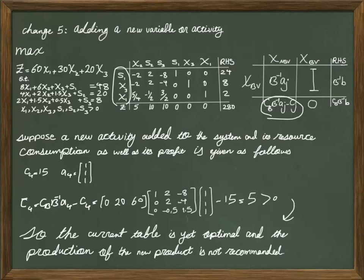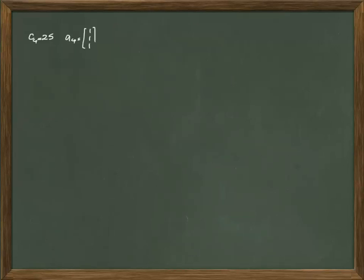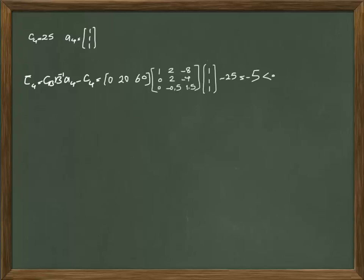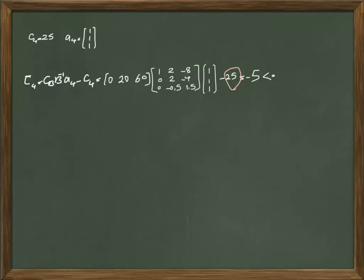However, there are scenarios where you get a negative value for the row of Z coefficient for X4, and then you might end up having to produce X4 by continuing your table. Let's look at another example where we get a negative value. This time, the profit for X4 or the new activity is $25, and A4 is the same as the previous case. Forming CBB inverse AJ minus CJ with 25 instead of 15, the value in the optimal table for X4 in the row of Z turns out to be negative 5.